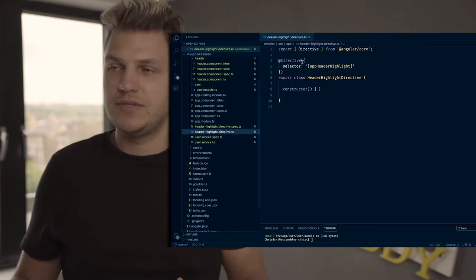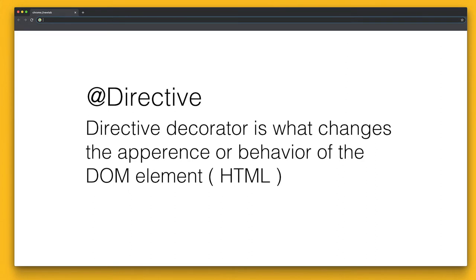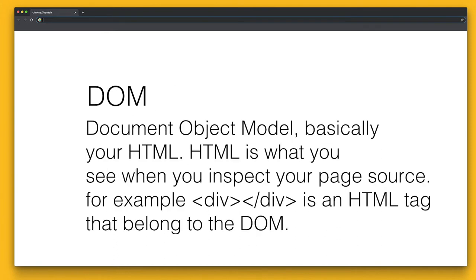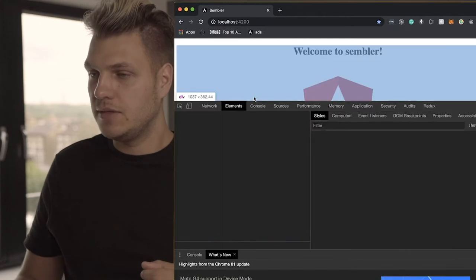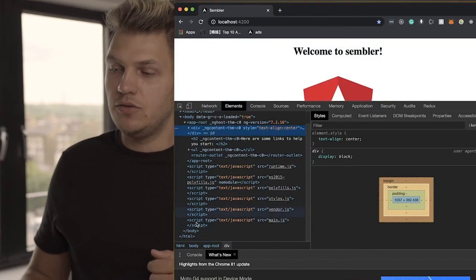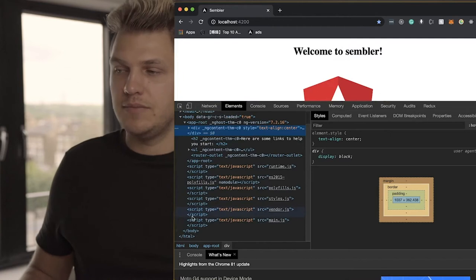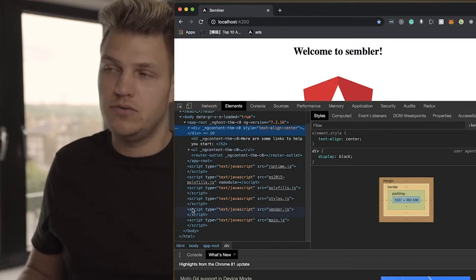Next, let's talk about directives. A @Directive decorator changes the appearance or behavior of a DOM element. When you include it in your HTML, it changes the DOM — it can change how the HTML gets rendered or how the user interacts with it. If you don't know what DOM is, DOM stands for Document Object Model. In simple human words, it's basically the HTML — anything you see when you inspect element. DOM consists of your HTML tags; it's what renders the view visually onto your screen.